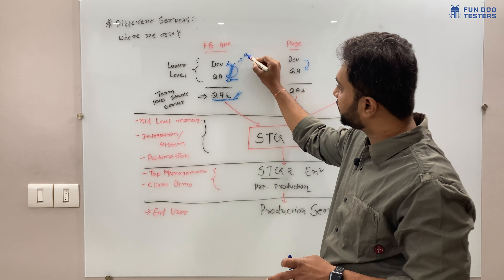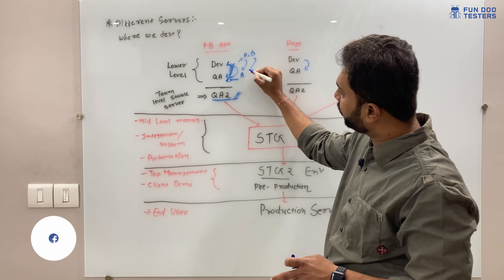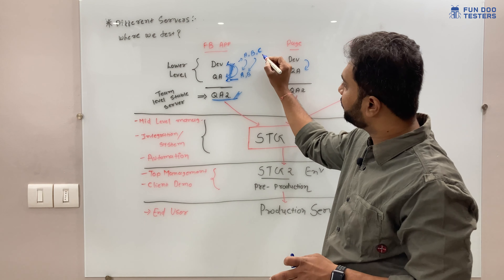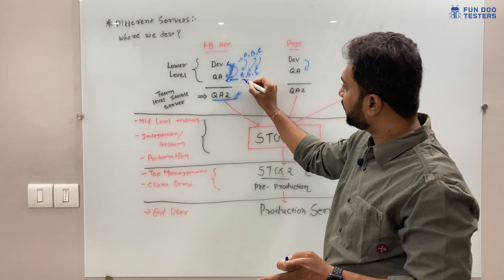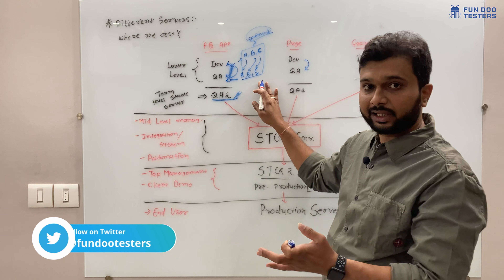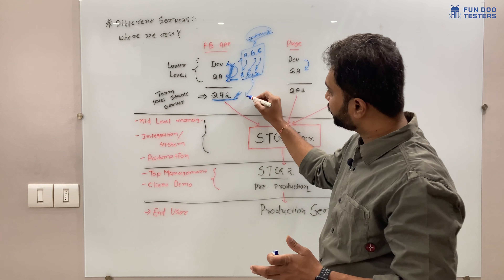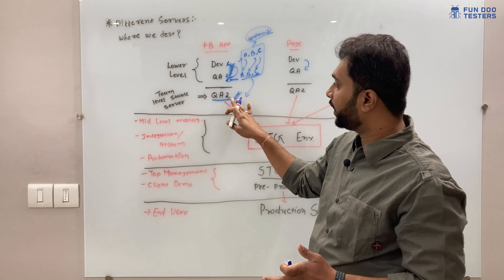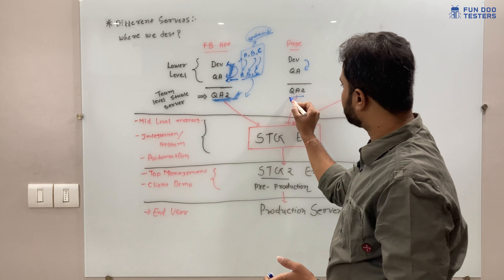Once the application is stable at the team layer, there is one stable server. Developers build functionality A, it goes to the QA environment for testing, then they work on functionality B, deploy to QA, then functionality C - all in sprint one. Once everything is done, the test lead does a retrospective, and if the three functionalities are confirmed, they push into the QA2 environment, where higher management such as directors and technical leads use the application.